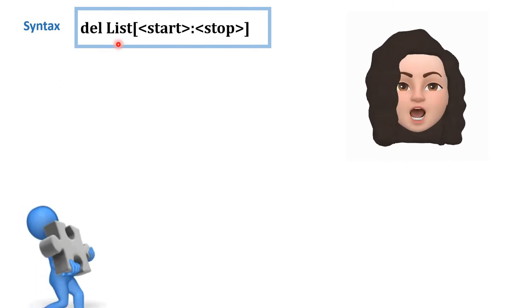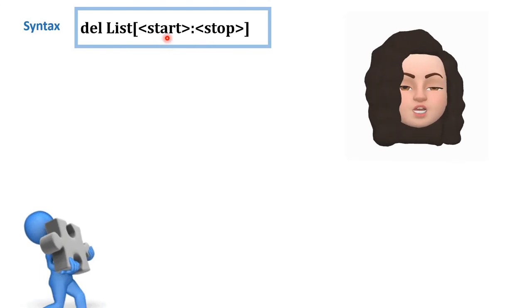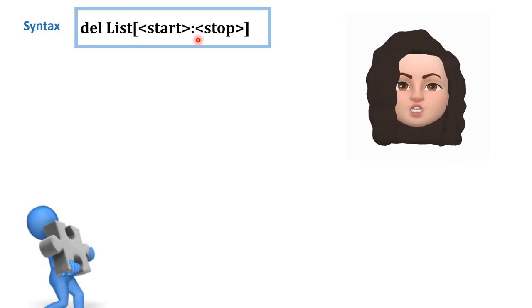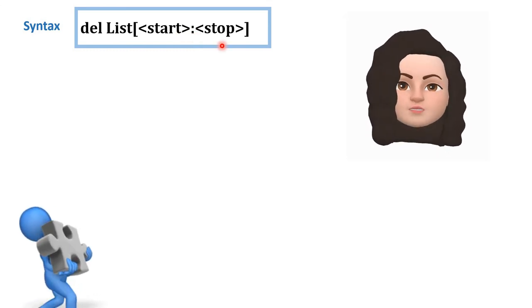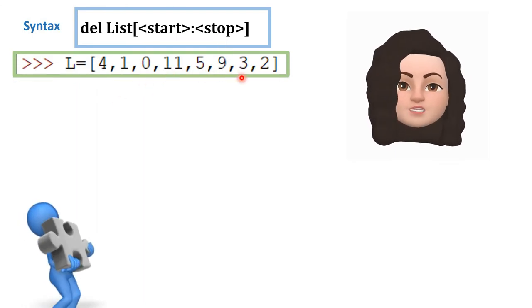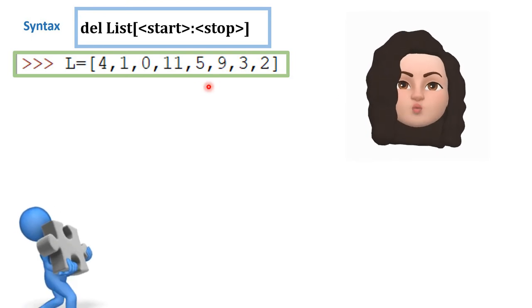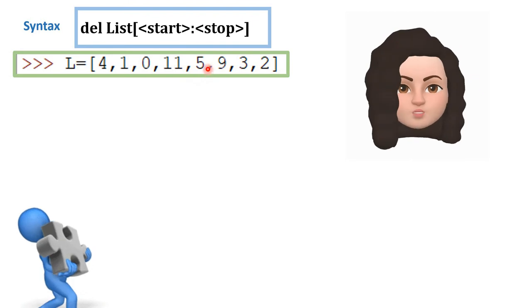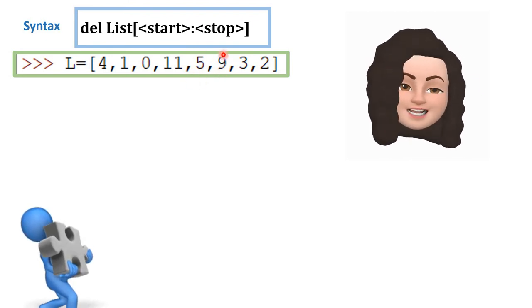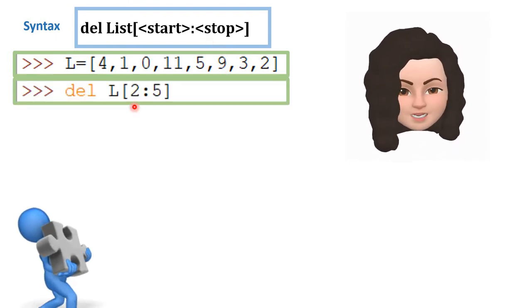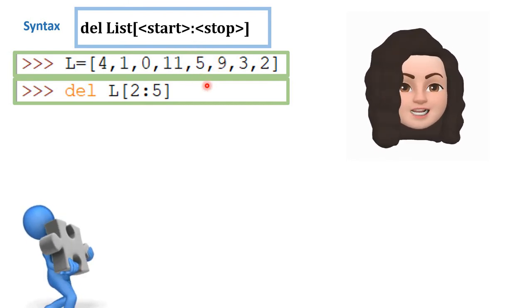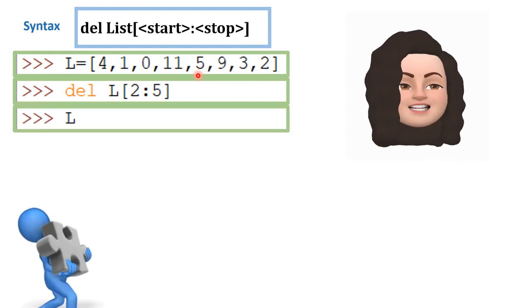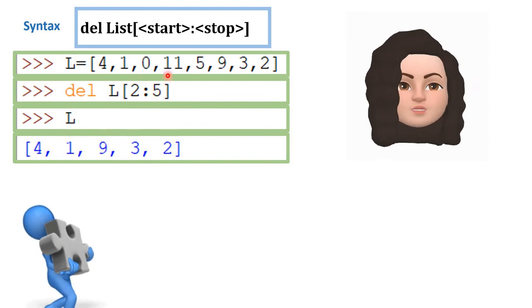To delete a range of elements, use del with a range. Specify the starting and ending index — the ending index element is not included. For example, L is [4, 1, 0, 11, 5, 9, 3, 2]. To delete elements 0, 11, and 5 (at indices 2 to 4), we write del L[2:5]. After deletion, L becomes [4, 1, 9, 3, 2].